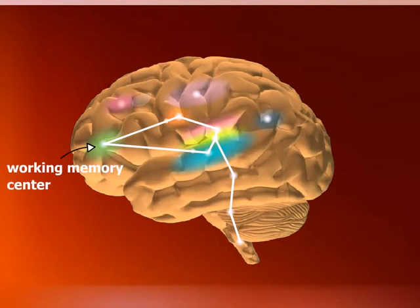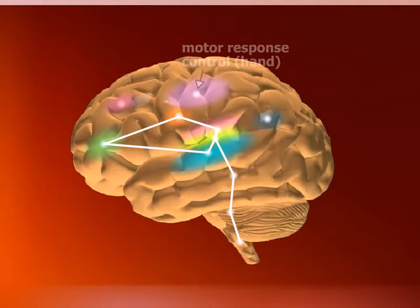By requiring you to remember increasingly long and elaborate information, they aim to exercise the working memory centers nearer to the front of your brain. And when you respond to what you hear in the program by clicking or moving things on your screen, you exercise the part of the brain responsible for translating what you hear into action.